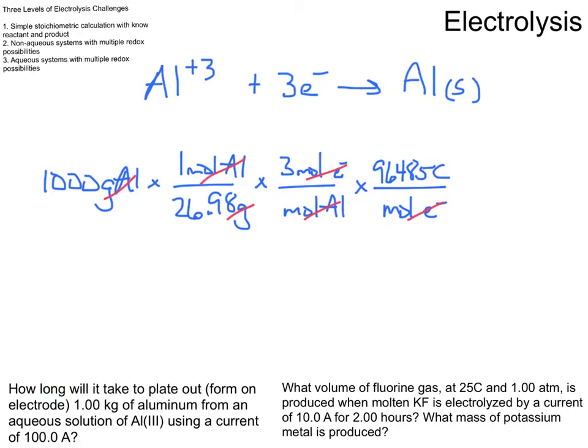So what unit do I have that combines time and charge and coulombs? Well, that's where the current comes in. So I'm now going to use the fact that I have a current of 100 amps. So every second, I'm passing 100 coulombs through this electrolytic cell. 100 amps is 100 coulombs per second, it's a measure of the current.